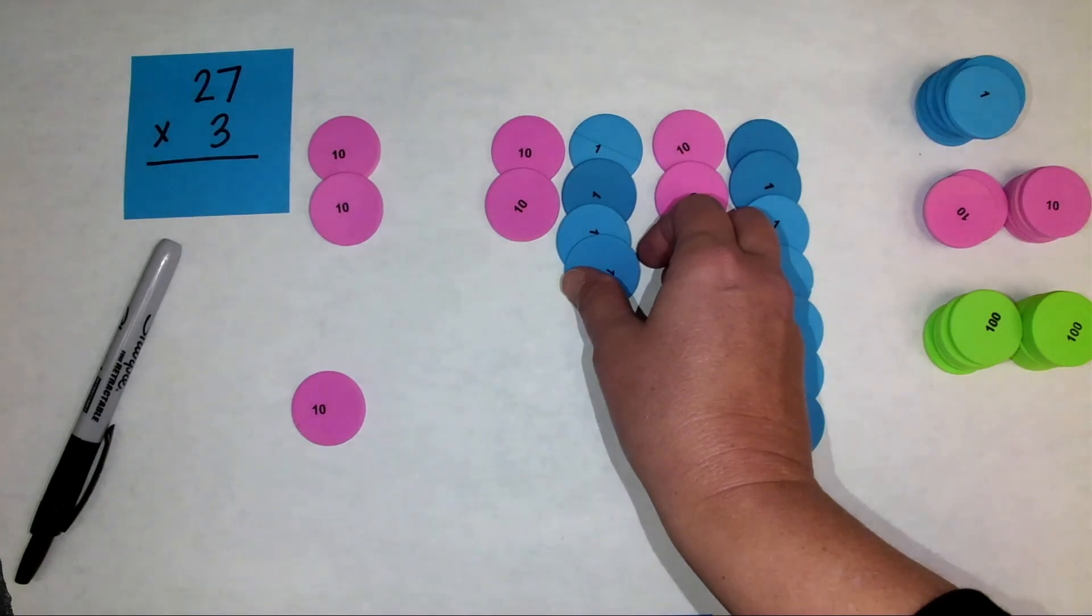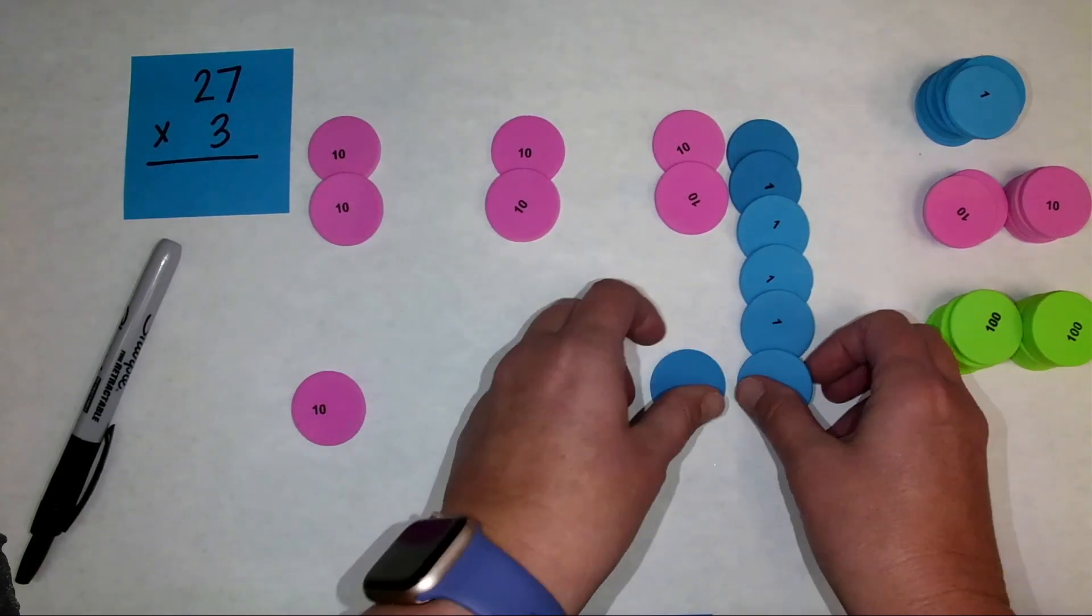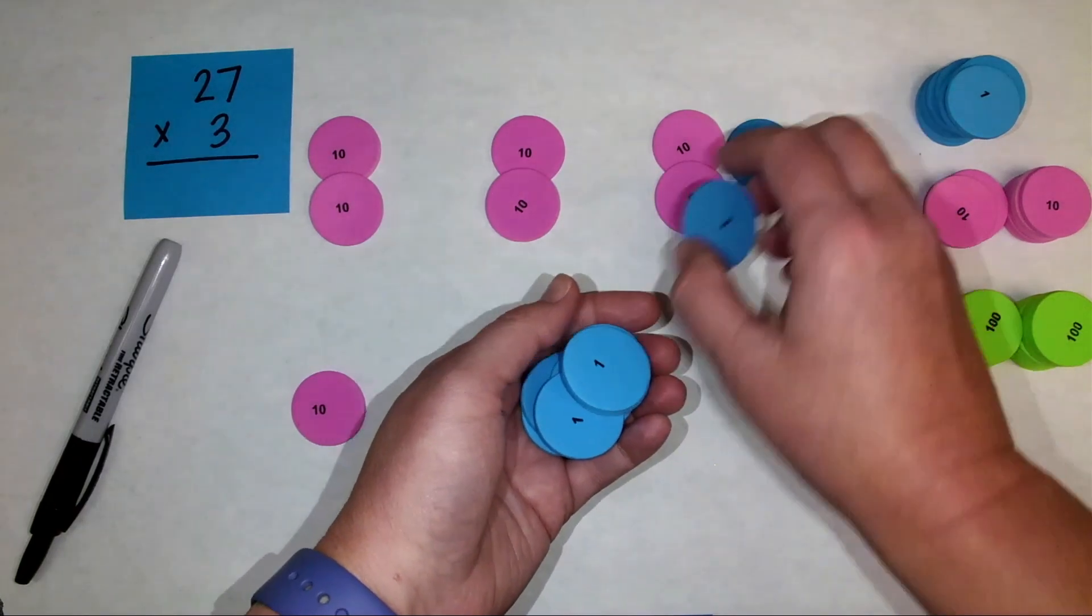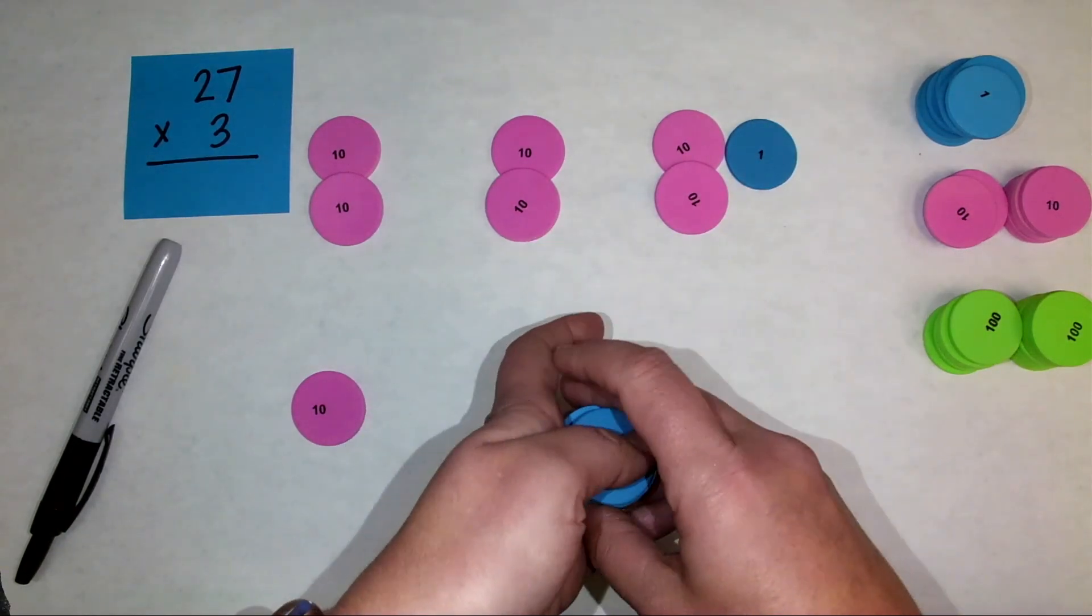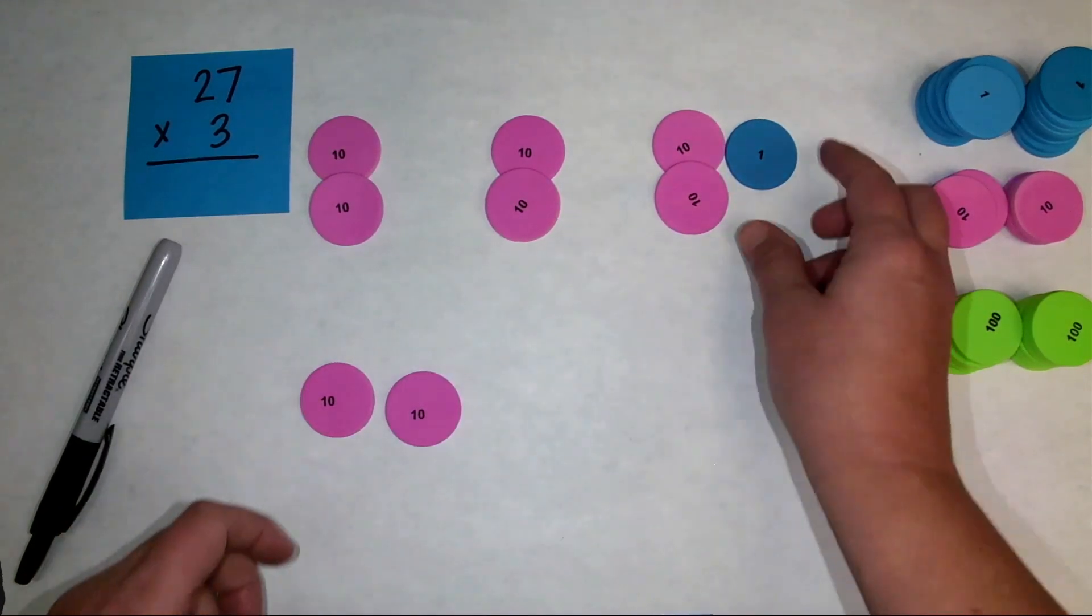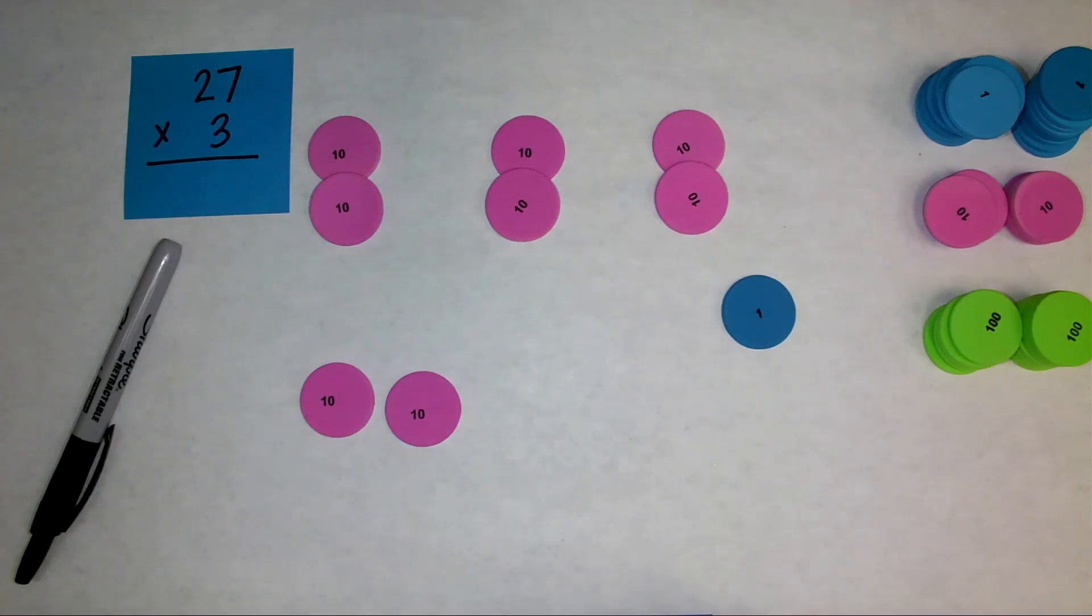Let's see if I can make another group of ten. One, two, three, four, five, six, seven, eight, nine, ten. Now I remember that ten ones is equivalent to one ten. And then I just have one here, so I don't have to do any more regrouping.